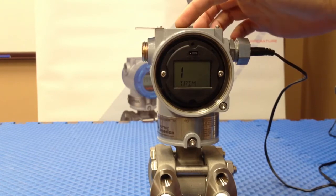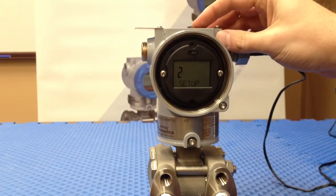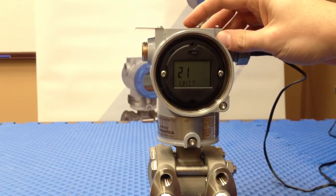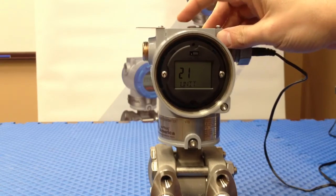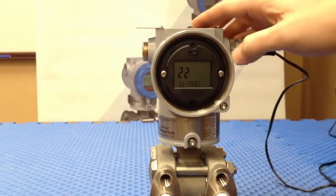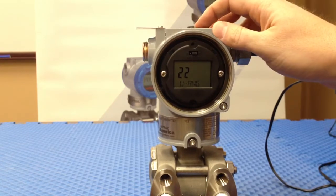We'll push the left button to go down, we'll push the right button to go over, and then we'll push the left button one more time and go to URNG to set our upper range.